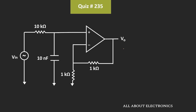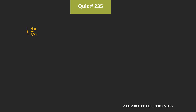The ratio of Vout/Vin can be given as (Vout/Vx) × (Vx/Vin). We know that Vout/Vx = 2, while Vx/Vin = 1 / (1 + jωRC). That means the magnitude of Vout/Vin = 2 / √(1 + ω²R²C²).